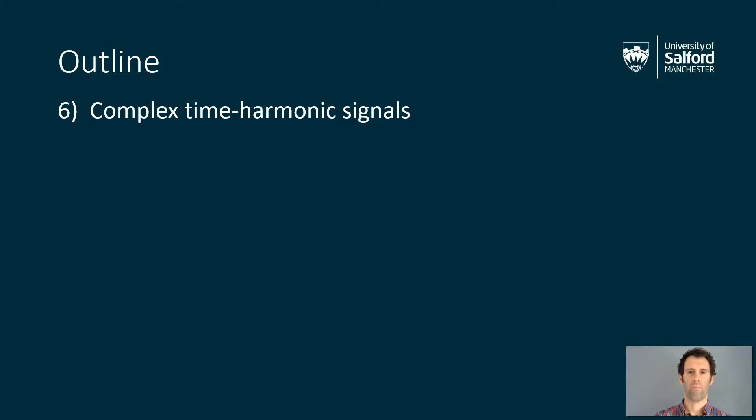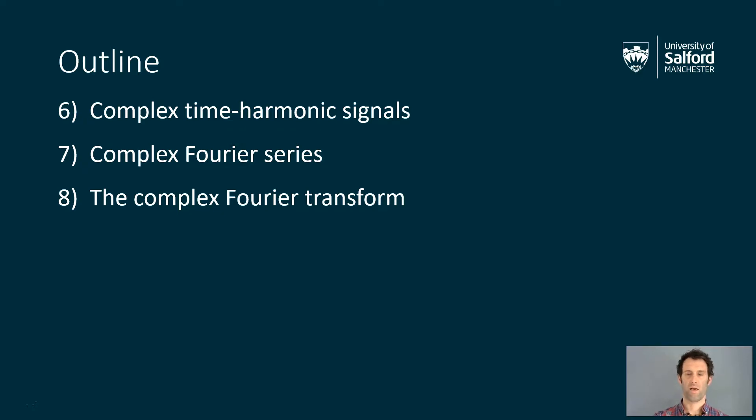Then we have complex time harmonic signals in part six. So what changes in notation might we have to use to use complex numbers to explain signals? And what benefits might this bring? Then we'll introduce a complex version of Fourier series, combining the ideas from part four—real valued Fourier series—and part six—complex valued signals—and look at what benefits that will bring and what effect it has on the spectrum. Then we'll introduce the Fourier transform in its complex variant. We'll talk about how this is related to Fourier series and we'll talk about the idea of spectral density that comes from that as well.